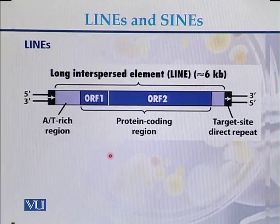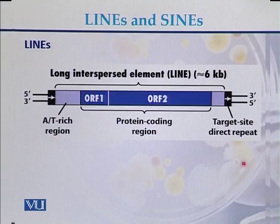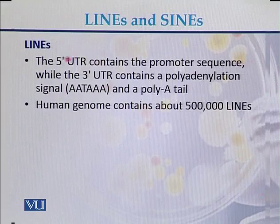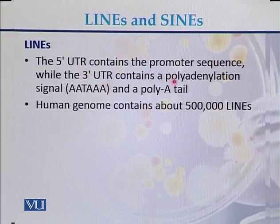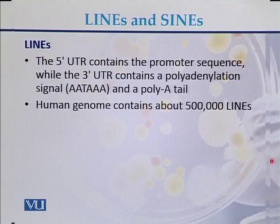In a typical LINE structure, the element consists of approximately 6 KB of DNA with two ORFs — ORF1 and ORF2 — and untranslated regions on both ends. The 5' UTR contains promoter sequences, while the 3' UTR contains a polyadenylation signal or poly-A tail. In the human genome, there are approximately 500,000 LINEs present throughout.